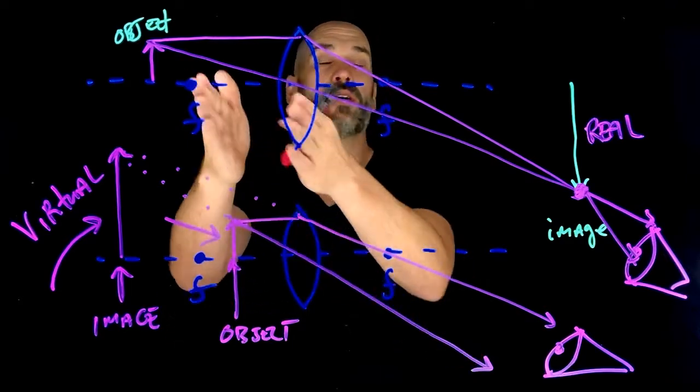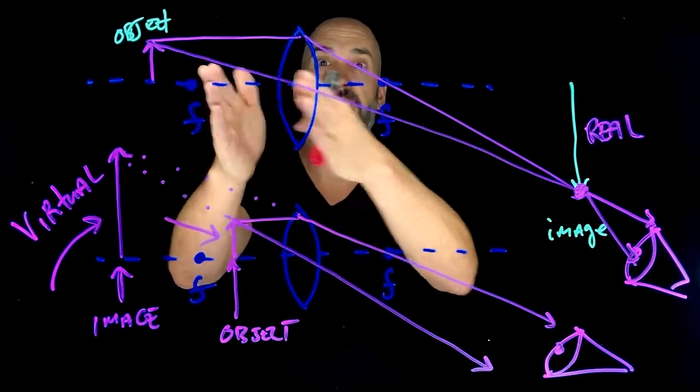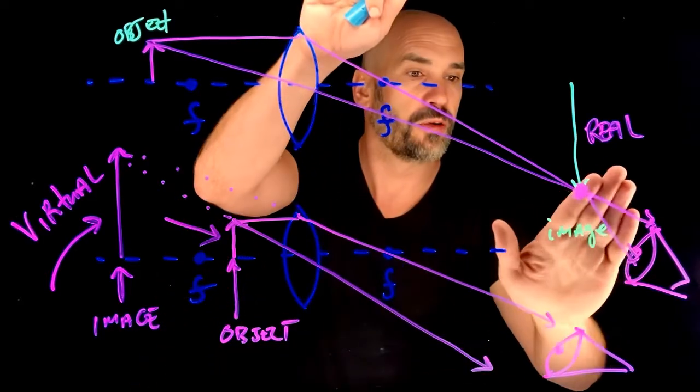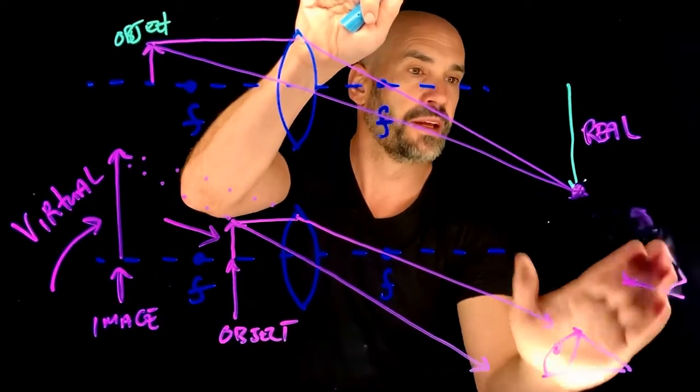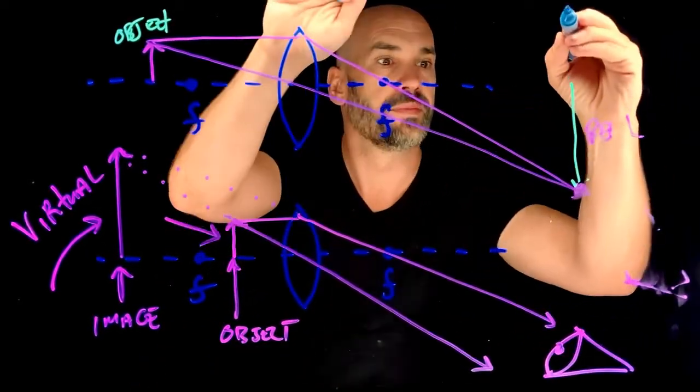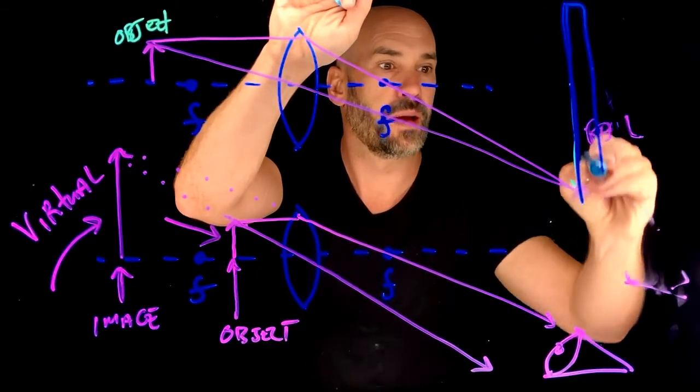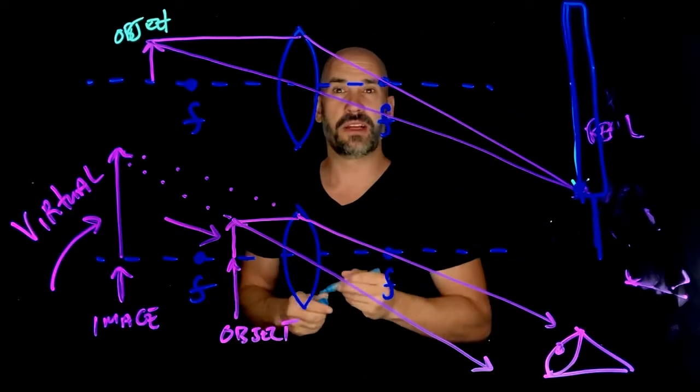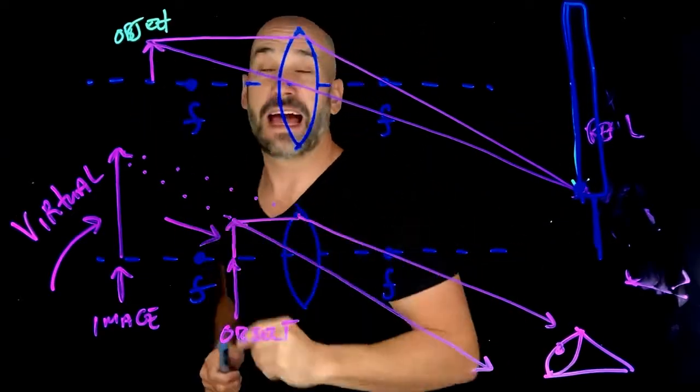Whereas in this case, this would be more like how a movie projector works or a slide projector. If I just erase all this here and I put a screen, then that is actually going to be light projected on that screen.